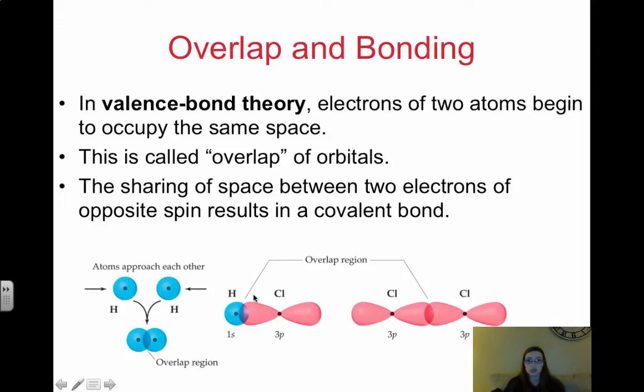So an example down here shows HCl. So you have this 1s orbital starting to overlap with the 3p of the chlorine. It's where your valence electrons are, keep in mind. And then the same thing with the chlorine and the chlorine to make Cl2. The valence electron that's in one of the 3p orbitals starts to share the same space with an oppositely spinning electron in another 3p orbital. And that's how we start to get these covalent bonds.